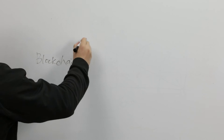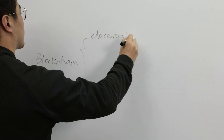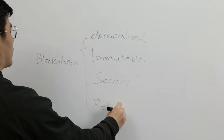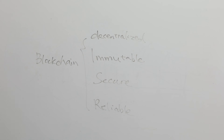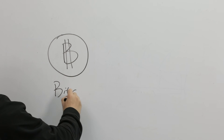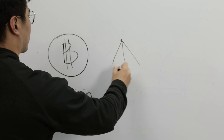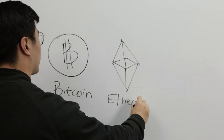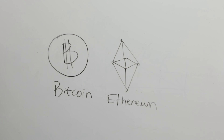So these are the features of blockchain: decentralized, immutable, secure, and reliable. Today, blockchain has become the core component of cryptocurrency, such as Bitcoin. In addition, there are also various derivative applications, such as Ethereum, an underlying application development platform.